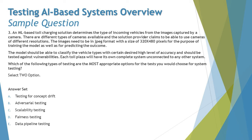The question asks which types of testing are most appropriate for system testing. Option A — testing for concept drift — is ruled out because concept drift is tested after deployment, not at the system testing level. Option B — adversarial testing — is important because the scenario states the system should be tested against vulnerabilities. Adversarial testing addresses that adverse side, so this is one correct answer.